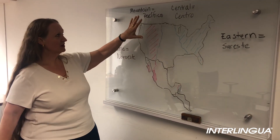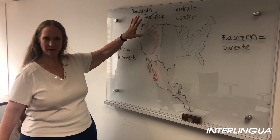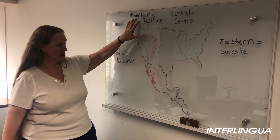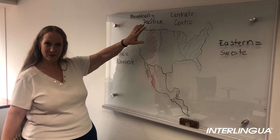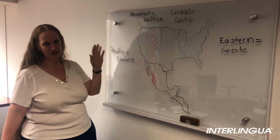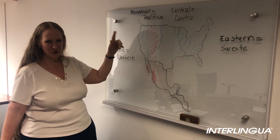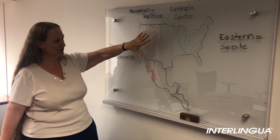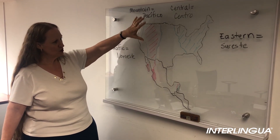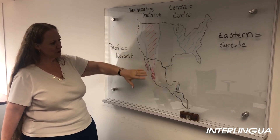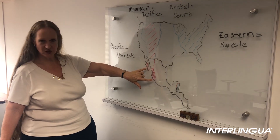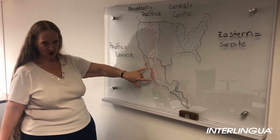The next one we have is Mountain. In English we call it Mountain Time, or in Spanish you call it Pacífico. This is where it's a little confusing because you call this Pacífico, which is all of this plus these sections here of Mexico.